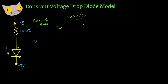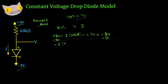Let's apply Kirchhoff's voltage law to analyze the circuit and find our voltage and currents. Starting from the top, we have positive 3 volts. We subtract our current times our resistance, 10k ohms, and then subtract our voltage drop across the diode, 0.7 volts, and set that equal to our negative voltage at the bottom, negative 3 volts. Rearranging, we get negative current times 10k ohms minus 0.7 volts equals negative 6 volts.